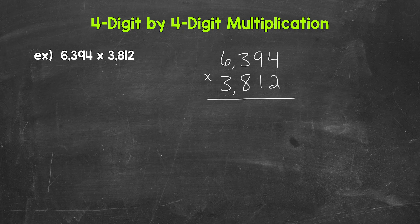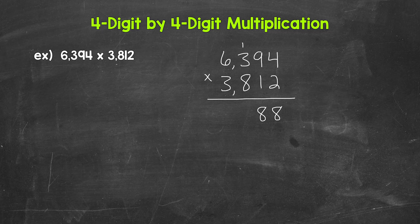Now that we are set up, we can multiply. We need to start with 6,394 times 2. We start by doing 2 times 4, which is 8. Then we have 2 times 9, which is 18 — so we write our 8 and carry the 1. Then 2 times 3 is 6, plus 1 is 7. And then 2 times 6 is 12, so we write the 2 and bring the 1 straight down. So 6,394 times 2 gives us 12,788.